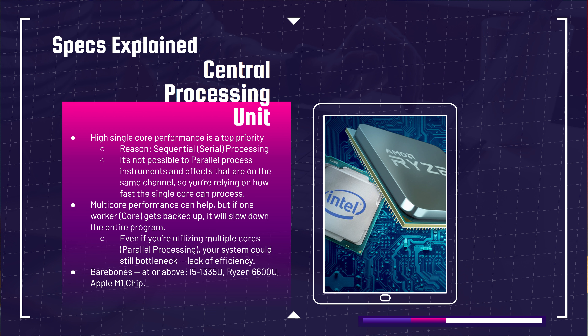First and foremost, let's talk about specs — the CPU, GPU, how much RAM, and how much storage you need. For the CPU, you want high single-core performance; it is the top priority. The reason is sequential or serial processing. No matter how many cores you have, you are running on sequential processing for most processes in music production software like a DAW. It's not possible to parallel process instruments and effects on the same channel — they have to be sequentially processed. This is why H-series processors are the most popular for music production laptops.